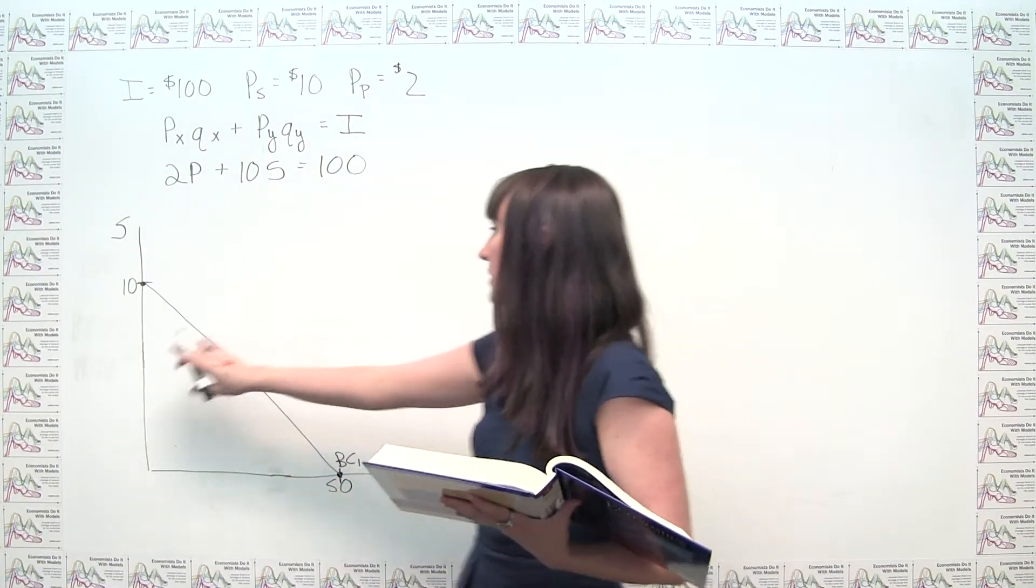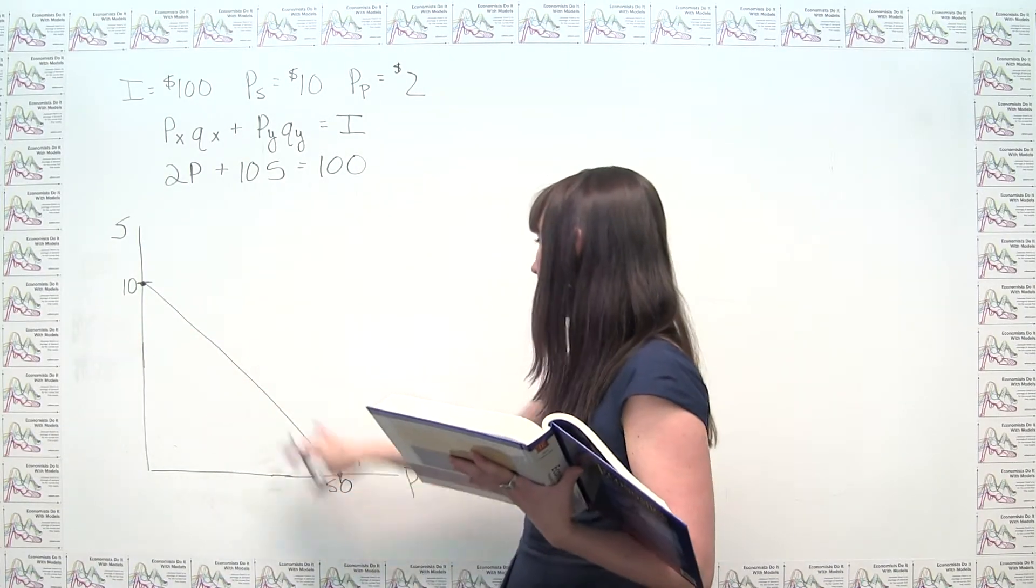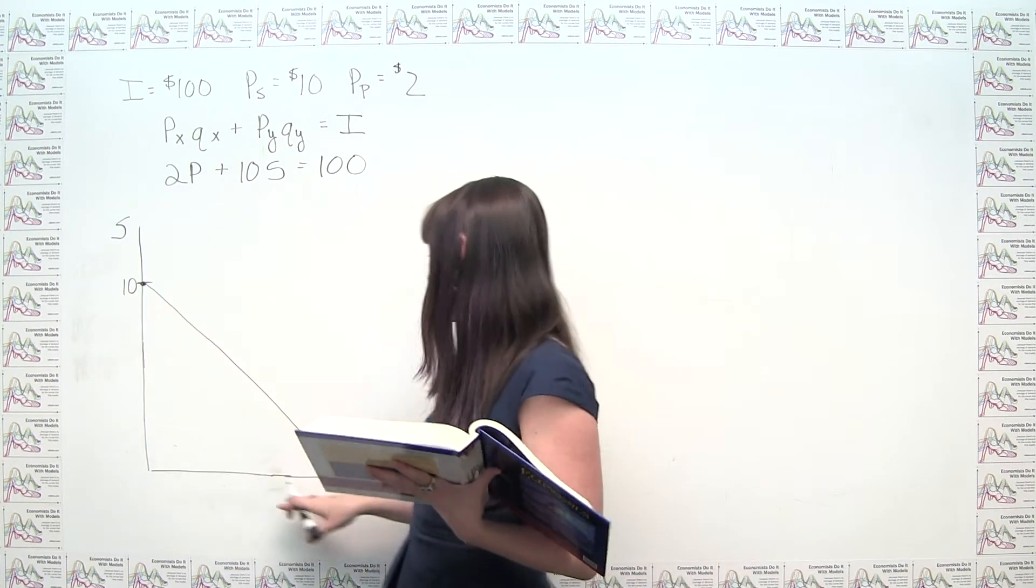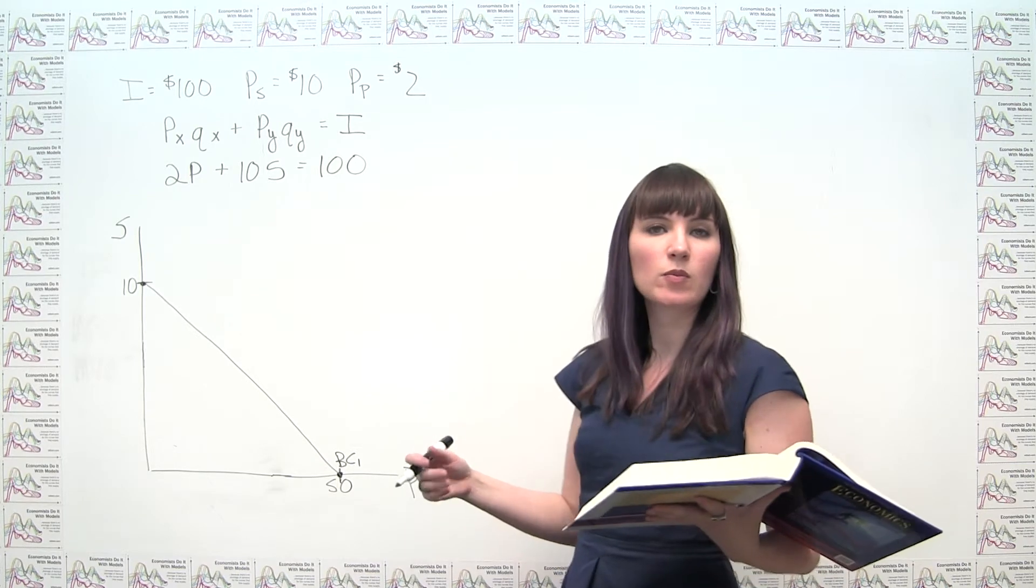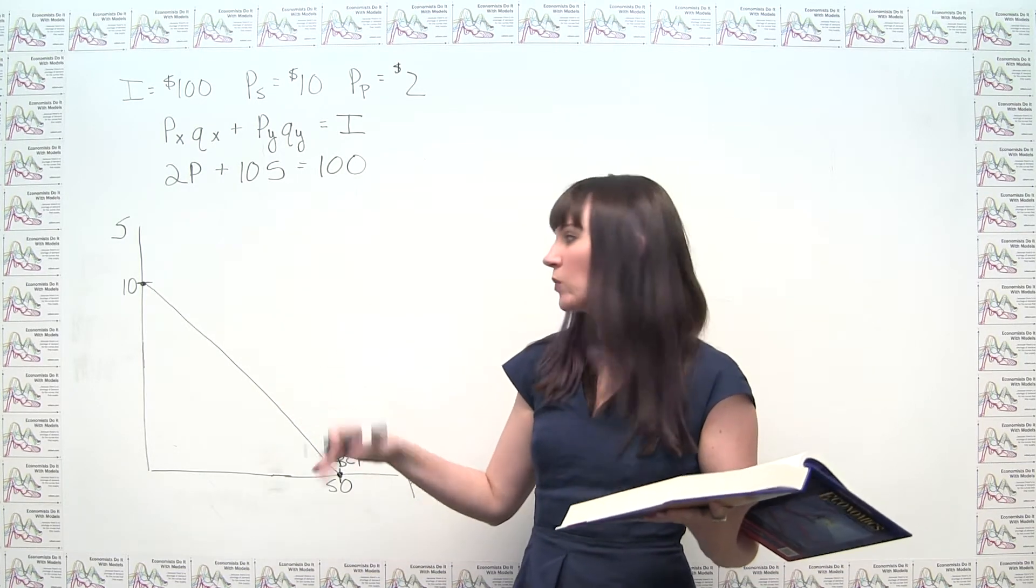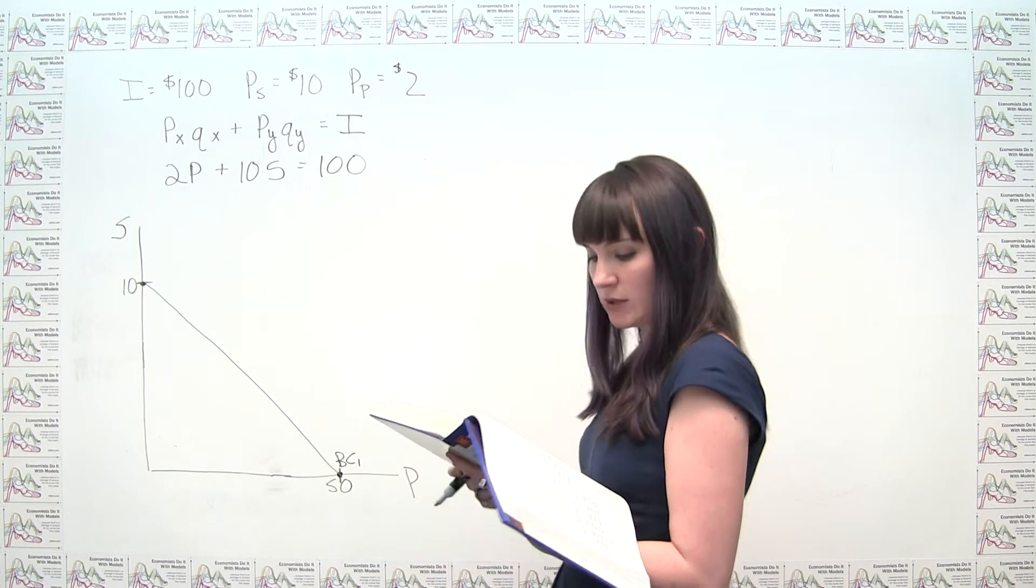So you'll notice that I cleaned this up a bit. I took away our calculations here, but I left our budget constraint where it was. I just changed the scale a little bit of our graph because I noticed that in the later part of the problem we were going to be shifting the budget constraint in, and I just wanted to make sure there was room.